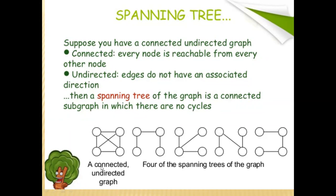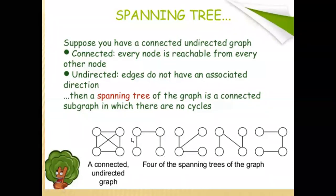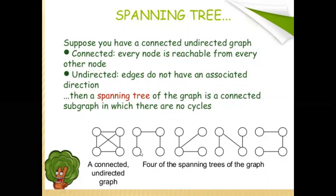For example, the first diagram is a graph. Any subgraph without any cycle is called a spanning tree. For this graph, there are four types of spanning trees. One type of spanning tree has no cycle — it has one cycle removed.